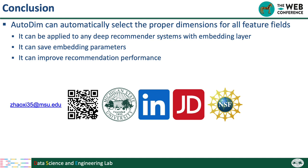To summarize, in this paper we propose the AutoDim model, which can automatically select the proper dimension for each different feature field. Our model can be applied to any deep recommendation system with embedding layers. It can save a lot of embedding parameters while significantly improving recommendation performance. Our work is supported by an NSF Grant and the WWW Student Scholarship Award. For more details, please refer to our paper. Thanks for listening.